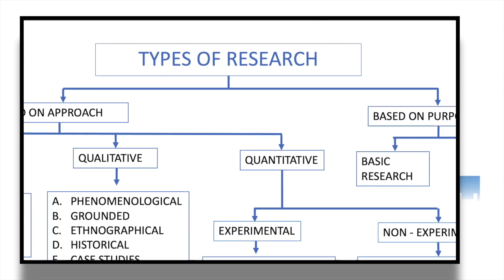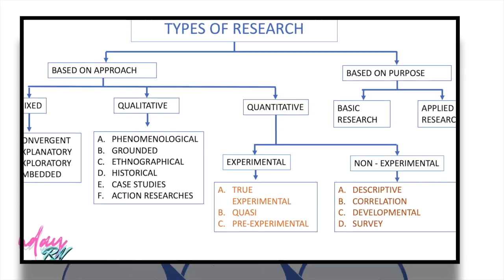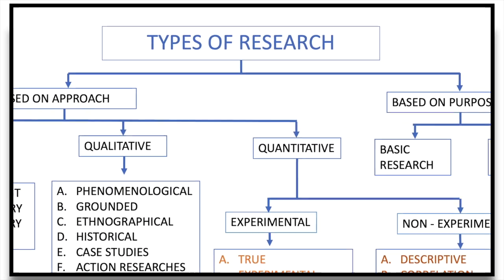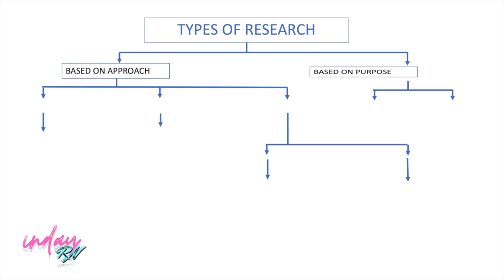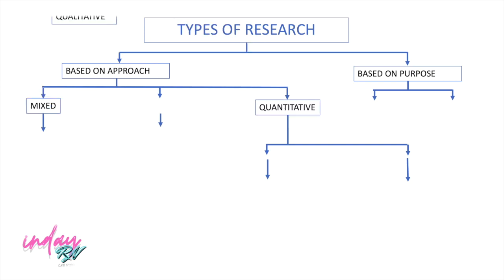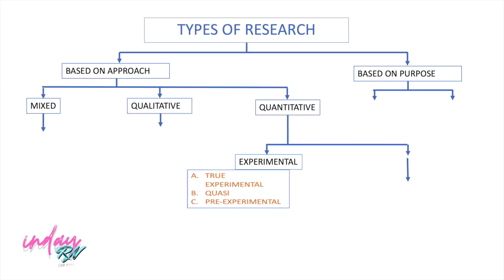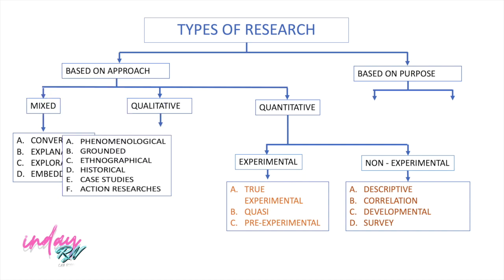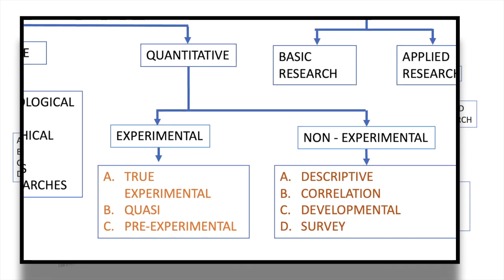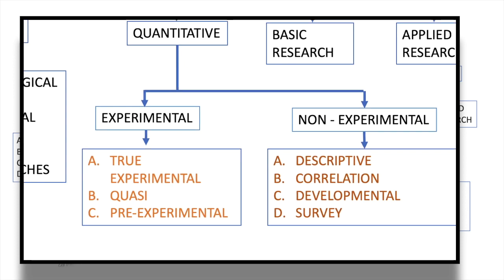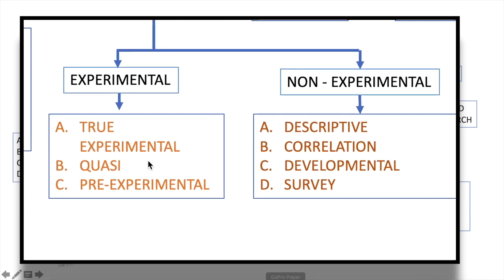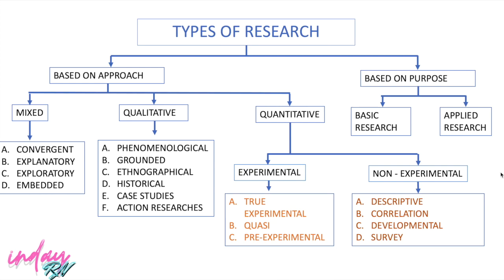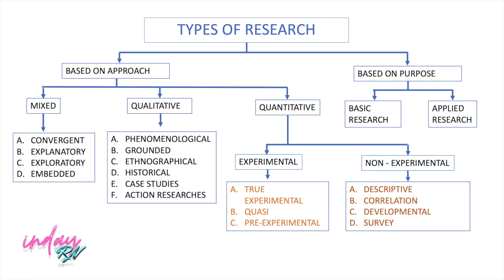From Part 1, we were able to discuss what is research and the purposes of Nursing Research. We were able to discuss the diagram of research. And now, on this video, we are going to continue the discussion, especially on different approaches and the types of researches based on purpose. From Based on Approach, we discussed the different types of Quantitative Approach. And on this video, we are going to continue.